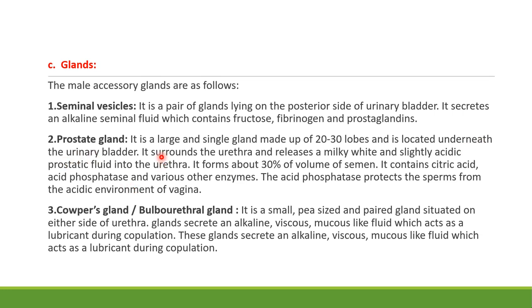The prostate surrounds the urethra and releases a milky white, slightly acidic prostatic fluid into the urethra, contributing about 30 percent of semen volume. It contains citric acid, acid phosphatase, and various other enzymes. Acid phosphatase protects the sperm from the acidic environment of the vagina.